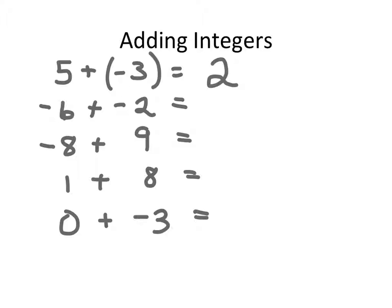In the next problem, I have negative 6 — that means I don't have 6 things. And I'm going to add 2 more things that I don't have, so that now means I don't have 8 things. So my answer is negative 8.